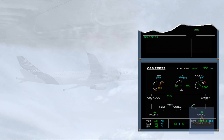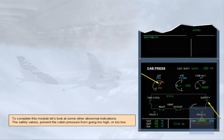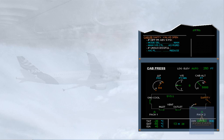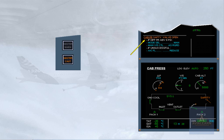To complete this module, let's look at some other abnormal indications. The safety valves prevent the cabin pressure from going too high or too low. An ECAM caution 'cabin pressure safety valve open' is generated and the safety valve indication on the cabin pressure page changes to amber.